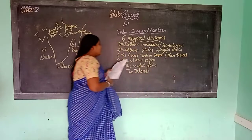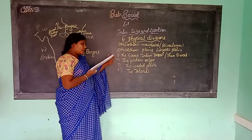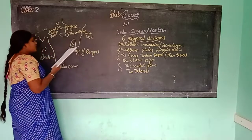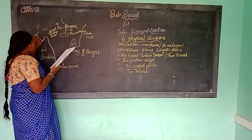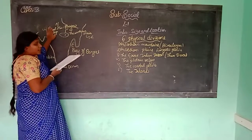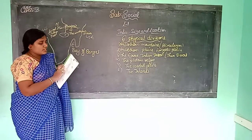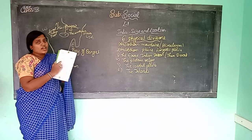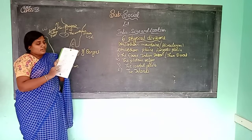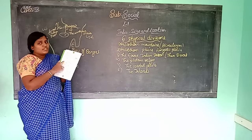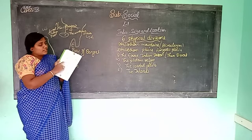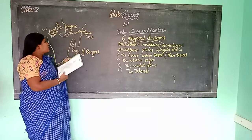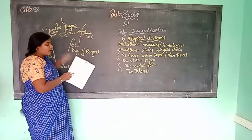The Great Indian Desert is also called the Thar Desert. It is a desert area shown in light yellow color on the map — a very hot, dry area.